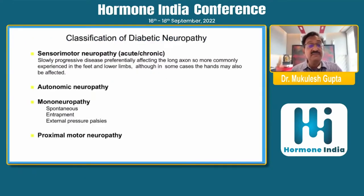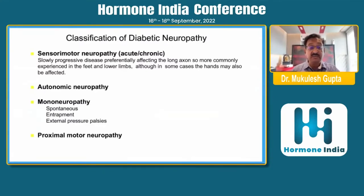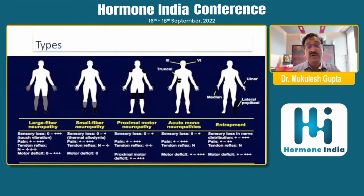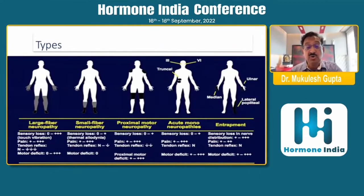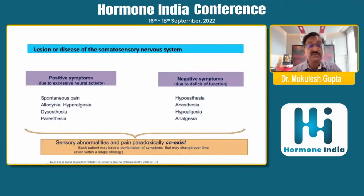Briefly touching on the classification: we are all aware of sensory-motor neuropathy, autonomic neuropathy, mononeuropathy, and proximal neuropathy. The symptomatology depends upon the type of fibers involved — large fiber neuropathy or proximal motor neuropathy and acute motor neuropathy. Essentially, large fiber involvement affects motor function more than sensory, but if smaller fiber neuropathy is present, then we have more sensory symptoms.